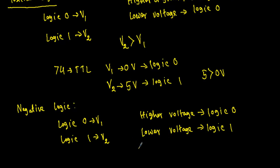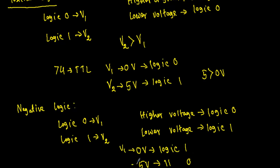Consider a circuit in which we represent 0 volt as logic one and 5 volt as logic zero. Let's say 0 volt is V1 and 5 volt is V2. Here, 5 volt is obviously greater than 0 volt, and the greater voltage represents logic zero while the lower voltage represents logic one — that means this system uses negative logic.